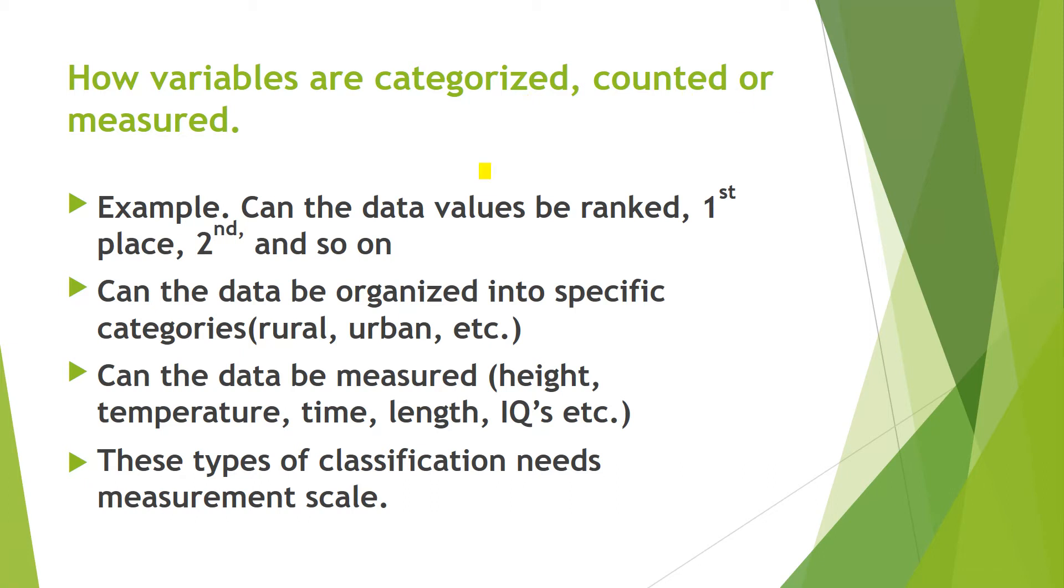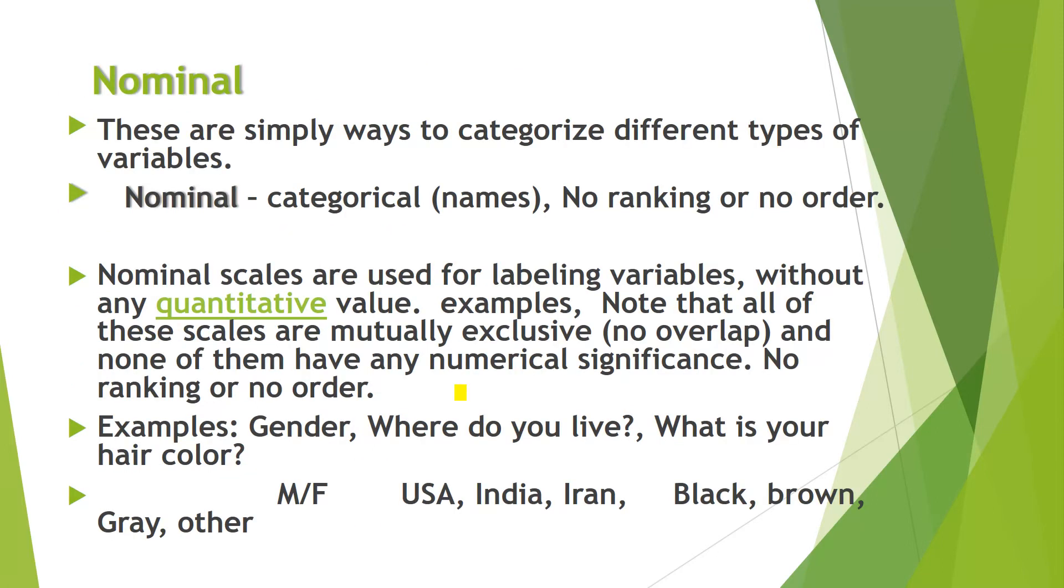How variables are categorized, counted or measured? Can the data values be ranked? First, we have to see, can the data values be ranked? Suppose we have some data and we can make it ranking first, second and so on. Can the data be organized into specific categories, rural, urban, etc. Can the data be measured just like height, temperature, time, length, IQ scores, etc. These type of classification needs measurement scale. There are four different measurement scales.